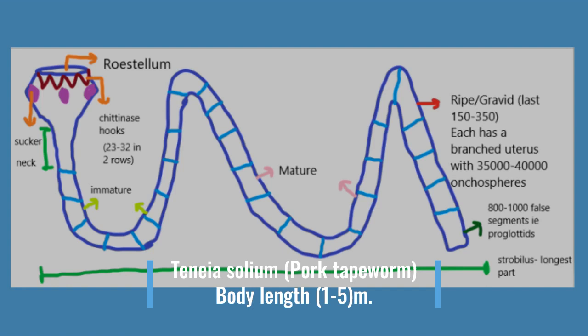Shedding happens from behind — strobila sheds its last proglottids from the end. This process of shedding is also called apolysis. This tapeworm — the pork tapeworm — is small: it is 5 meters long.